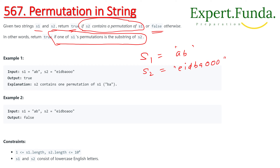So if we talk about the permutation, the permutation of s1 can be 'a' or 'a, b' or 'b' — those are possible arrangements. We can check if these elements are available in s2. We can find that we have 'b, a' in this string. So this substring — from here to here — is a substring of s2, and so we can say that s2 contains a permutation of s1.